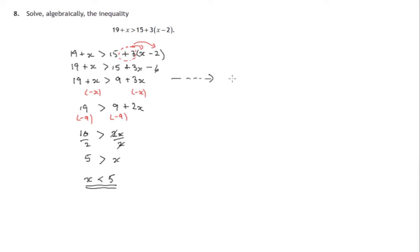There is an alternative at this stage where we choose to keep the letters on the left and the numbers on the right. And if we're doing that, we would be subtracting 3x from both sides as a first step. And that would leave the 19 untouched. x minus 3x is minus 2x. The 9 has not been altered. 3x away from 3x is 0.